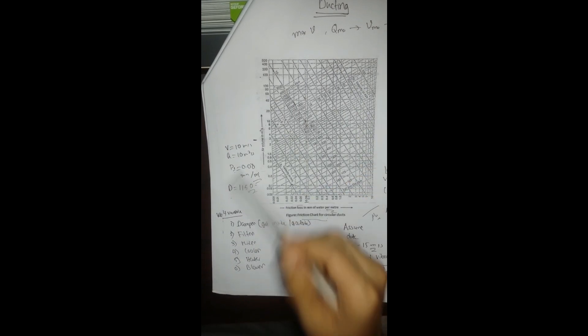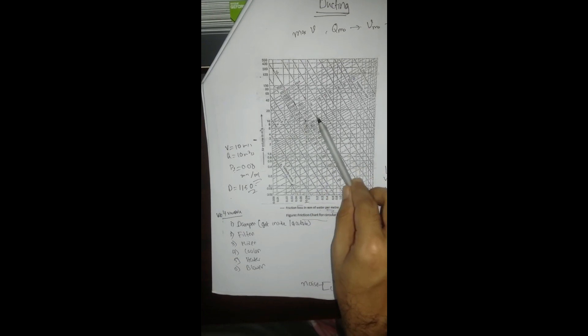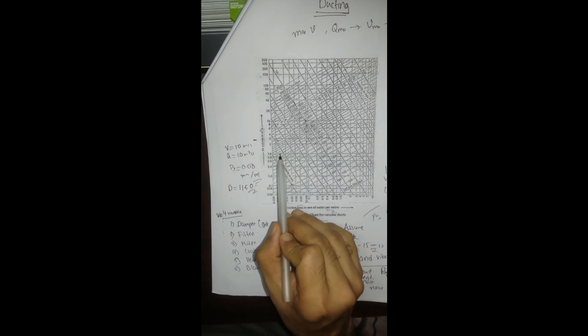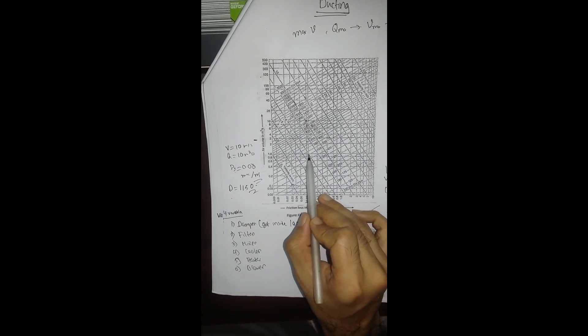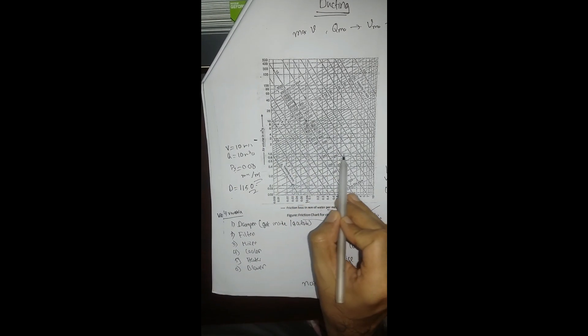Similarly, if we think about increasing the velocity at a constant volume flow rate, moving in this direction on the chart, we can see that increasing velocity corresponds to decreasing the duct diameter. That concludes the conceptual part — thank you for watching.